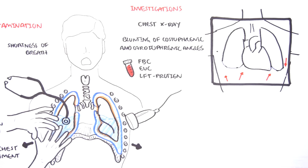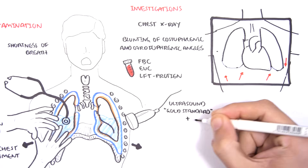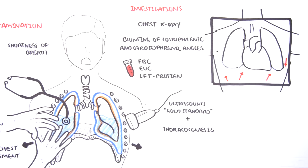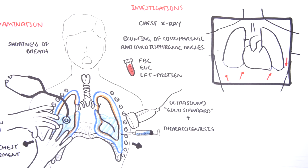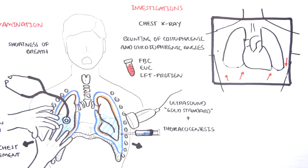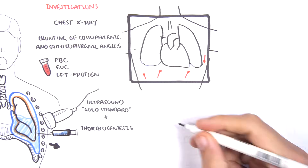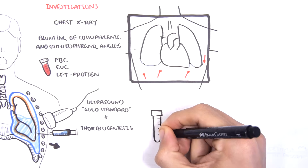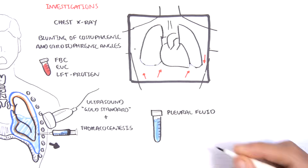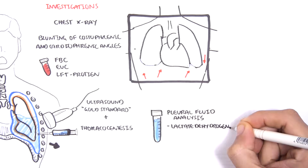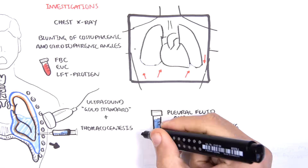The diagnosis of pleural effusion gold standard would be an ultrasound, and looking for the specific cause of the pleural effusion, thoracocentesis is warranted. Thoracocentesis is where they stick a needle in between the ribs with guidance of the ultrasound, and then fluid is drawn up for fluid analysis. Thoracocentesis is both diagnostic and therapeutic. It gets you a pleural fluid sample which can then be analyzed. Initially you would order lactate dehydrogenase and protein levels.